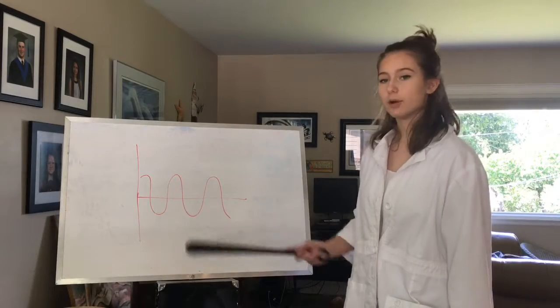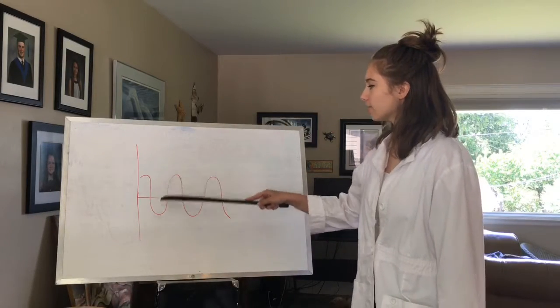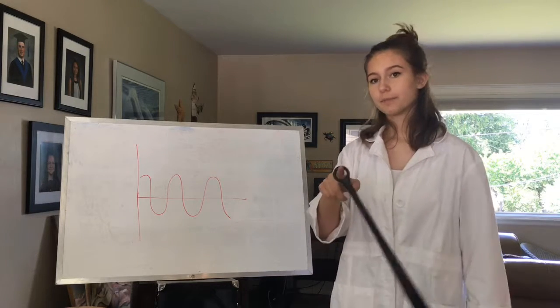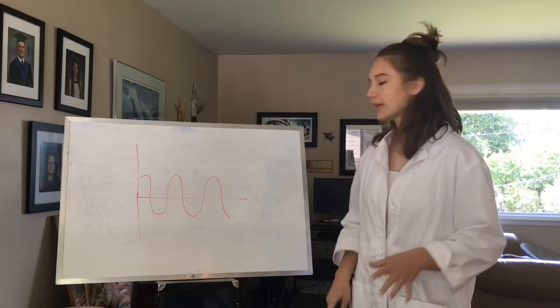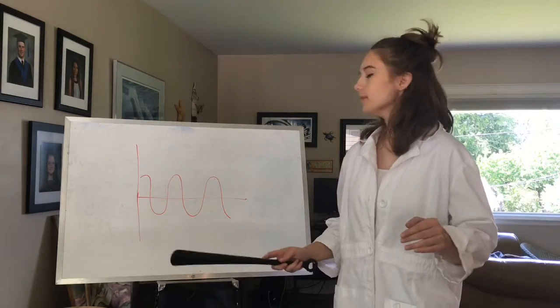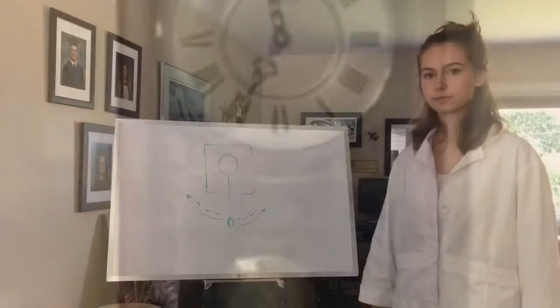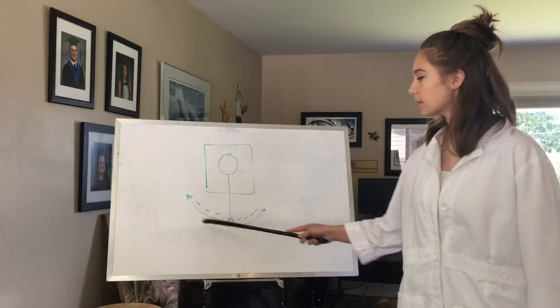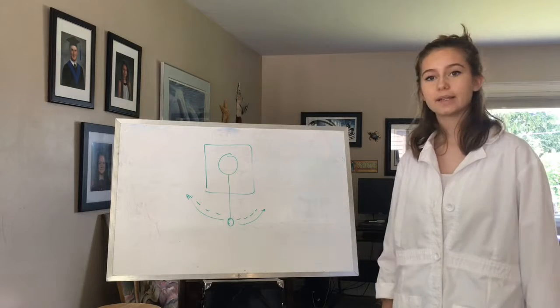So this shows oscillating motion because you can see the rise and fall and acceleration as the object swings back and forth like such. We're going to take a look at an example of oscillating motion in a pendulum swinging in the clock. So this shows oscillating motion because you can see the continuous back and forth of the swinging pendulum.